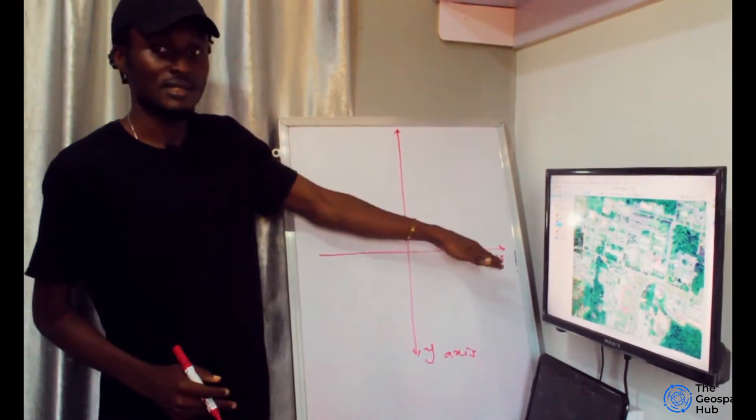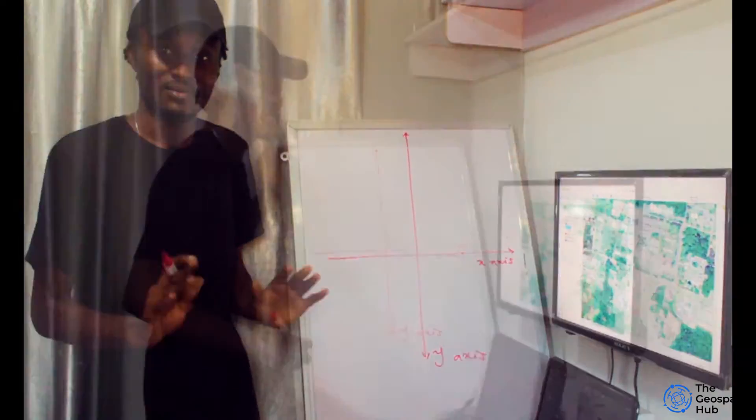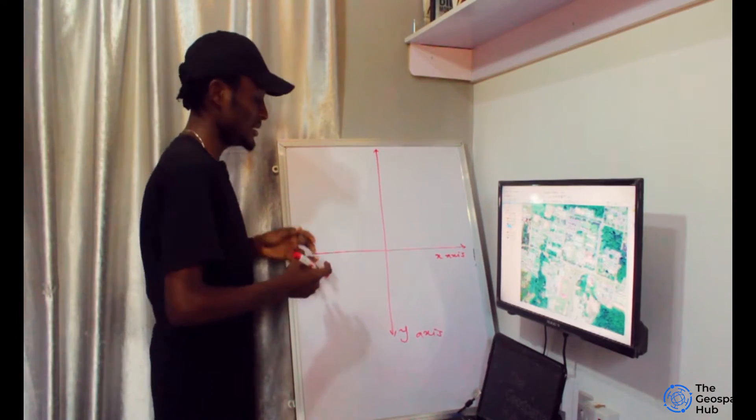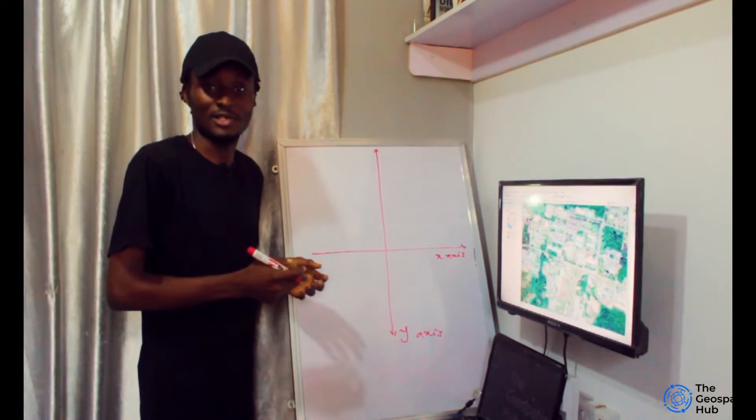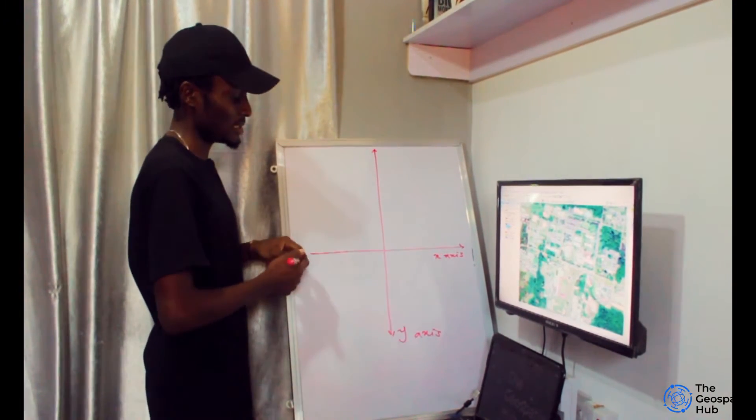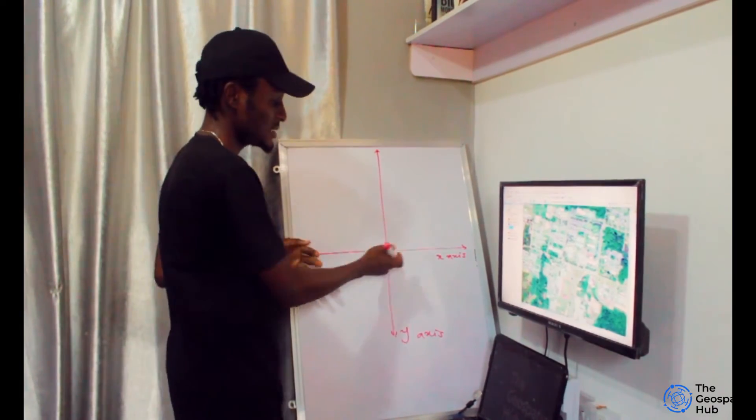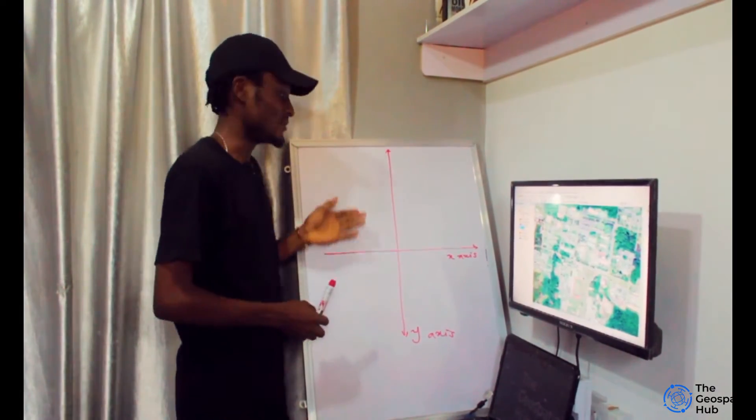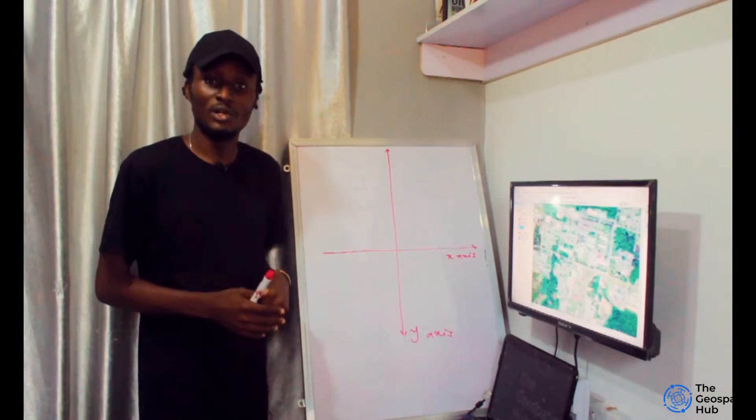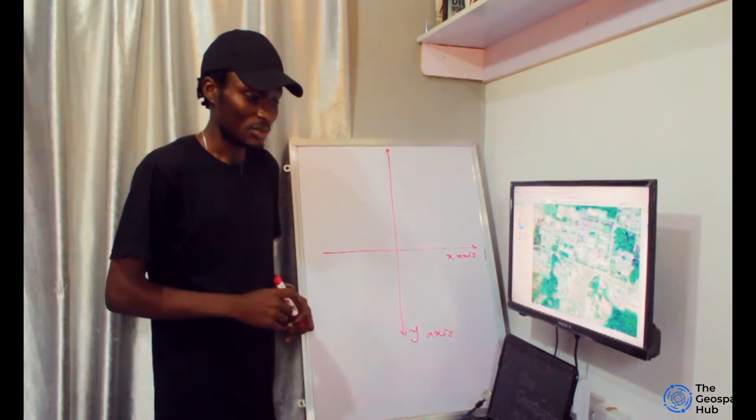This is the X axis and this is the Y axis. X and Y are basically horizontal and vertical directions on a plane coordinate system. To emphasize: X is the horizontal axis and Y is the vertical axis. Now we'll move on to latitude and longitude.